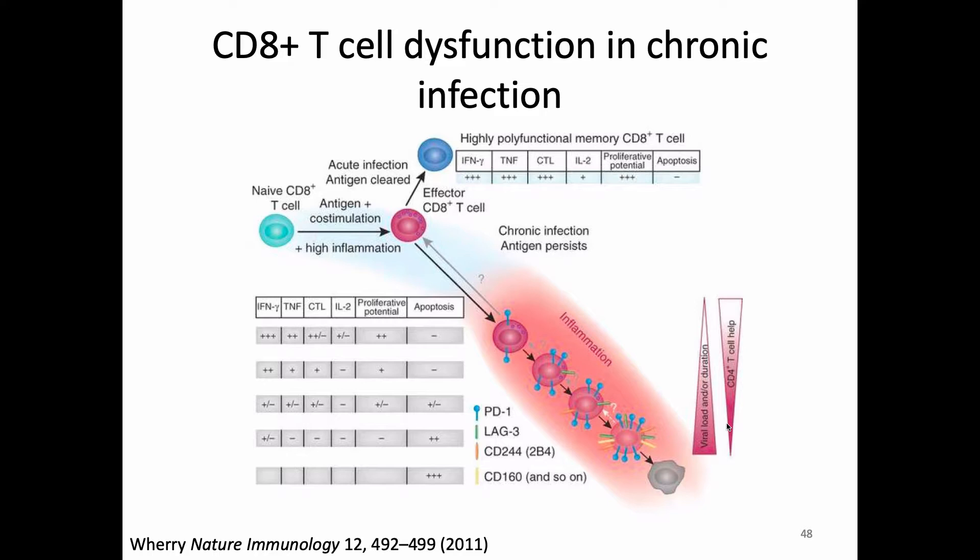There is a phenomenon called T-cell exhaustion. If we have a situation where there is chronic infection and antigen persists for a long period of time, our T-cells start to undergo this process of chronic exhaustion. They go from being able to do lots of functions to being able to do fewer and fewer, and finally they can do no functions and may undergo apoptosis. This process is related to how much PD-1 they have — PD-1 tends to be on more exhausted T-cells.